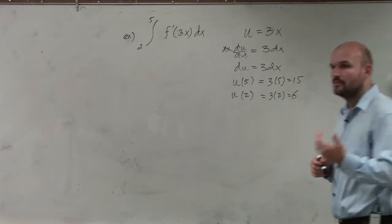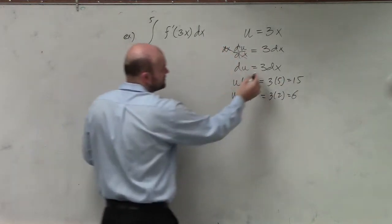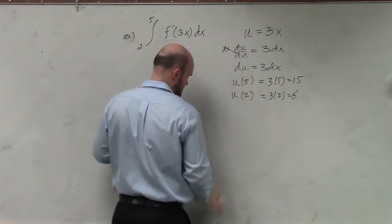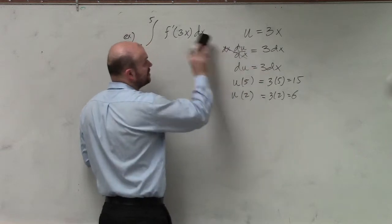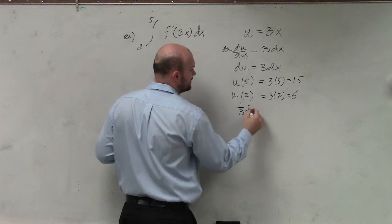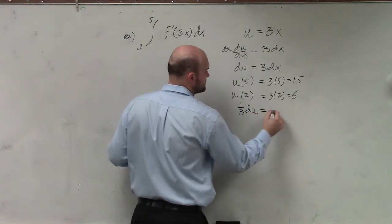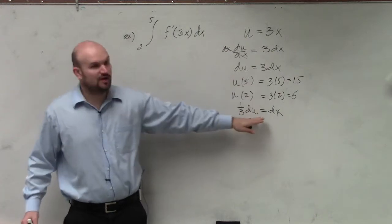So what this allows us to do now is take the 1/3 out. We need to solve for dx, right? So let's divide by 3, and let's do 1/3 du equals dx. Right? Divide by 3 on both sides to solve for my dx.